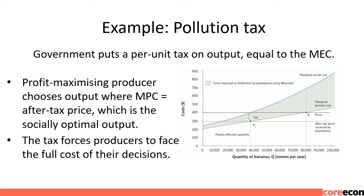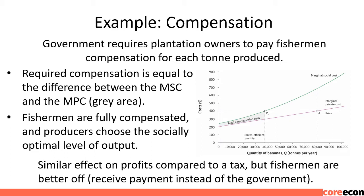The government puts a per-unit tax on output equal to the MEC. The profit-maximizing producer will choose output where MPC equals the after-tax price, which is the socially optimal output. The tax forces producers to face the full cost of their decisions. Alternatively, the government requires plantation owners to pay fishermen compensation for each ton produced equal to the difference between MSC and MPC. Fishermen are fully compensated and producers choose the socially optimal output of 38,000 tons. This has a similar effect on profits compared to a tax, but fishermen are better off as they receive payment instead of the government.